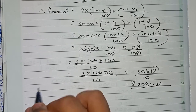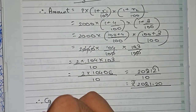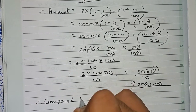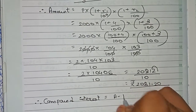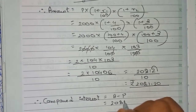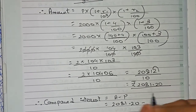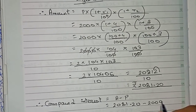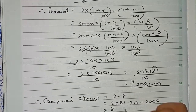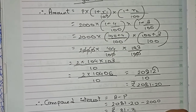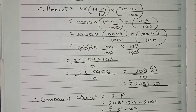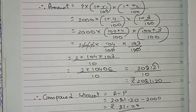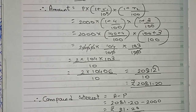Now to find the compound interest, the formula is: Compound Interest = Amount − Principal. So that is 2081.20 − 2000 = rupees 81.20. Therefore, the final amount is rupees 2081.20 and the compound interest is rupees 81.20. Thanks for watching, please subscribe for more solutions.